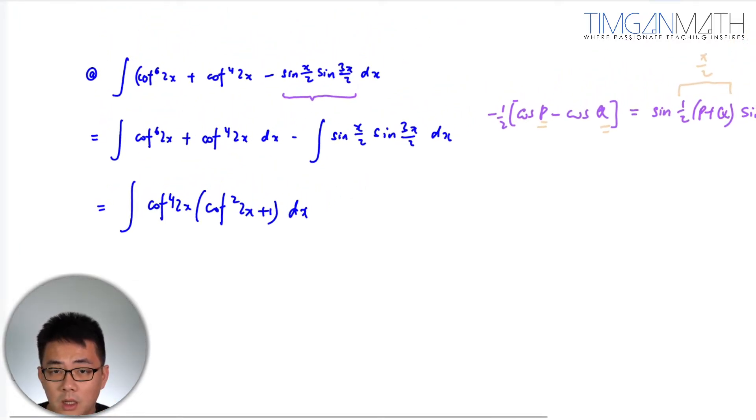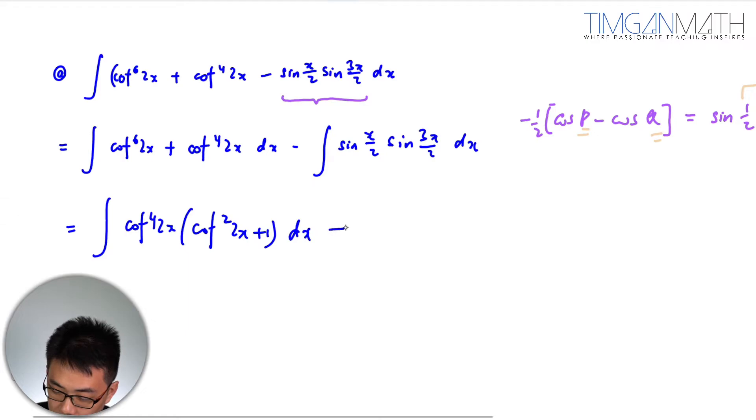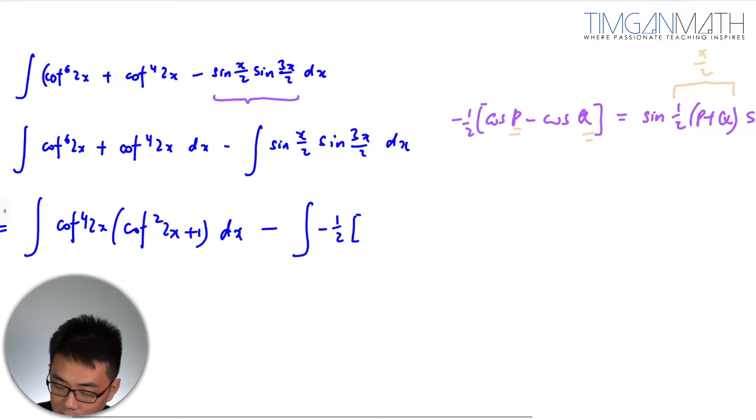All right then for the second part here we know that this will just be minus half, cosine p which is adding of these two would be cosine 2x.